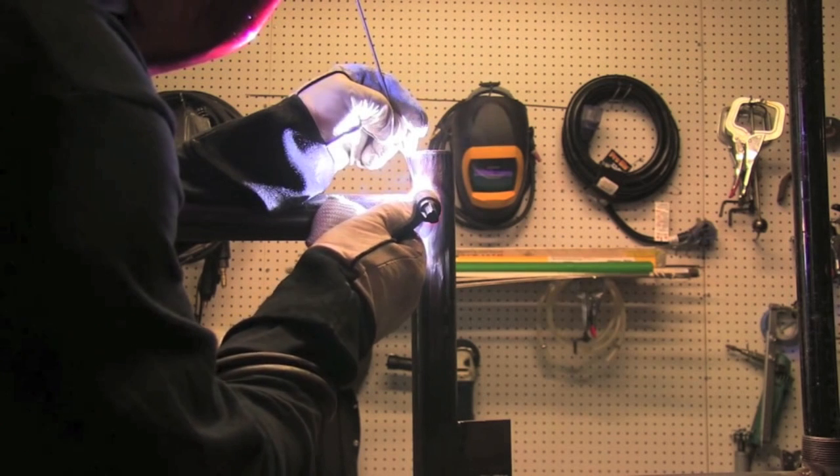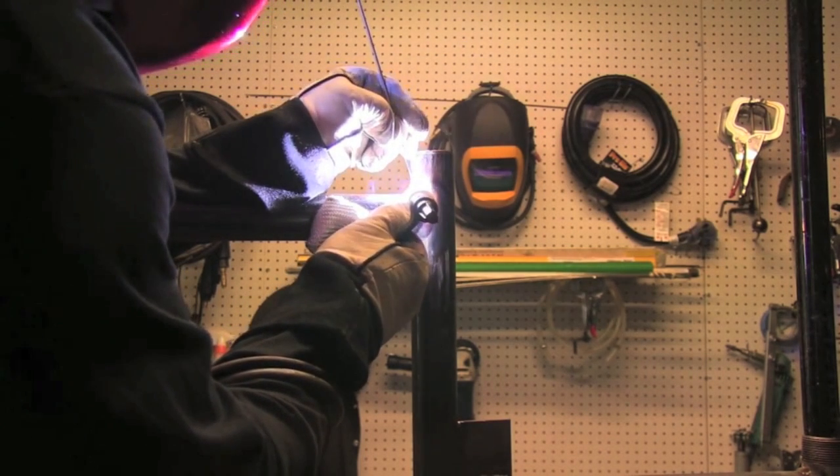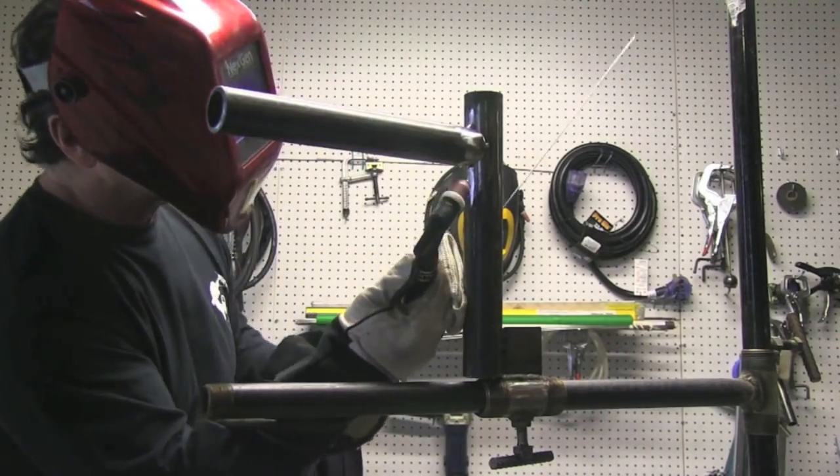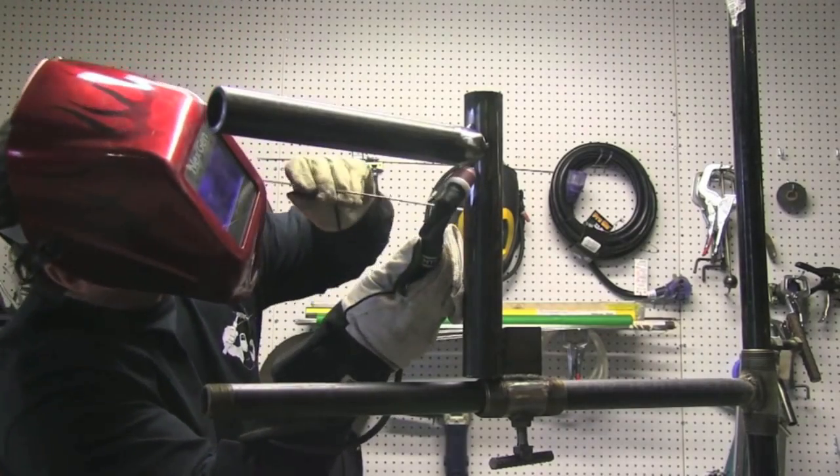The problem is really snapping out of the puddle. That's the biggest problem with scratch start, not starting the puddle. The biggest problem is snapping out of it and leaving a crater or grey area that's oxidized. But you can do some pretty decent work with a scratch start TIG unit.